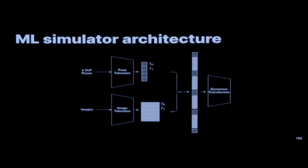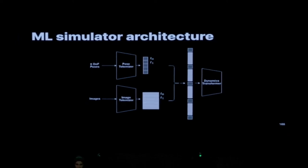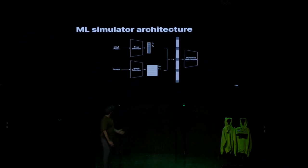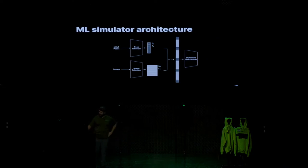So what's an ML simulator? An ML simulator is basically three parts, three components. I'm going to go into each component separately and explain what it does. By the end, we'll go back to our first slide. The three components are: an image tokenizer, a pose tokenizer, and the dynamics transformer.